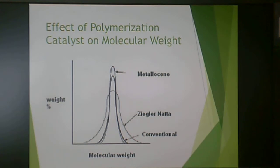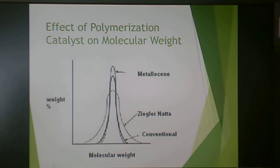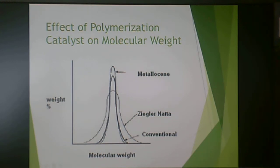This slide shows the effect of catalyst on molecular weight for polyethylene, produced using different catalysis methods. We have weight percent versus molecular weight for a conventional catalyst, a Ziegler-Natta catalyst, and a metallocene catalyst. What we see is a broadening or narrowing of the molecular weight distribution depending on the catalysis method. Conventional likely refers to free radical polymerization giving low-density product, while Ziegler-Natta and metallocene are used to make high-density polyethylene. Polymerization catalyst clearly has an effect on the molecular weight of the product.